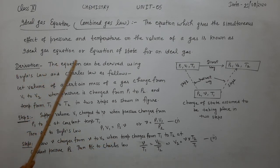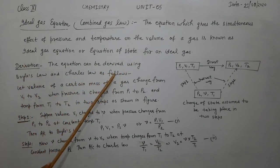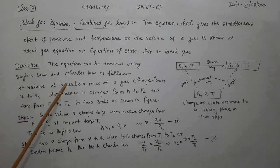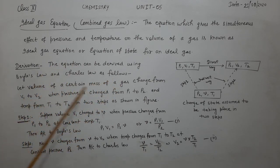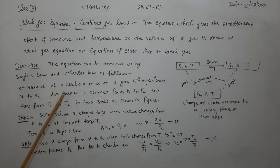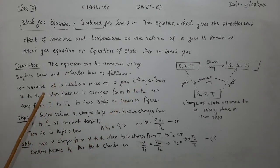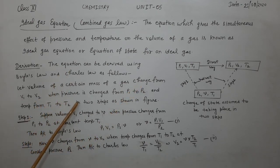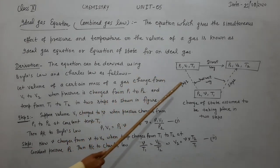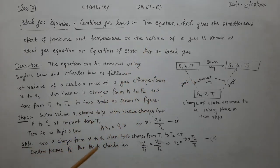The ideal gas equation can be derived using Boyle's law and Charles's law. We consider a certain mass of gas with volume V1, when pressure changes from P1 to P2, and temperature changes from T1 to T2, following the two steps described in the diagram.